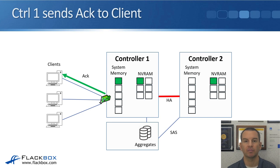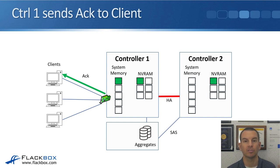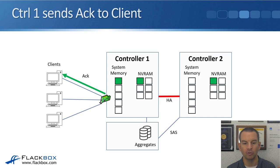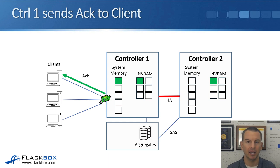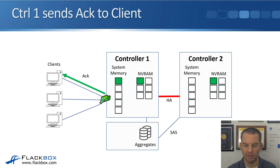At this point, as far as the client is aware, the data has been written to permanent storage. But notice that the data has not been written to disk yet — it's been written to system memory and NVRAM. Memory is super fast, much faster than writing to disk, so it's done like this for performance. We get the acknowledgement sent back to the client when it's been written to memory, before it's been written to disk. We get much better performance that way.